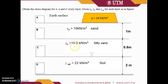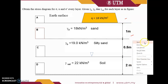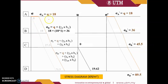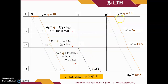Here is another example: surcharge loading q equals 18.2 kN/m² with a similar soil profile and groundwater table. The solution follows the same process. Starting at the surface with 18, then at layer B: 18 plus 18 × 1 equals 36, followed by total stress at C, total stress at D, pore pressure, and effective stress. You may try this example on your own.